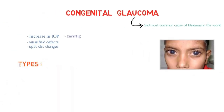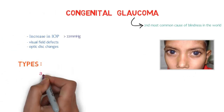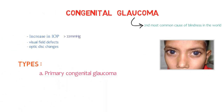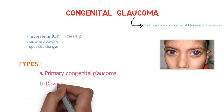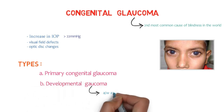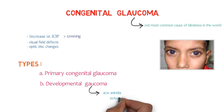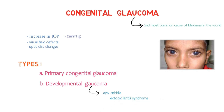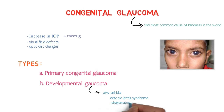There are two types of congenital glaucoma: primary congenital glaucoma and developmental glaucoma. Developmental glaucoma is associated with aniridia — a rare condition characterized by abnormal development of the iris — ectopic lentis syndrome, which is an inherited connective tissue disorder sharing features of Marfan syndrome particularly related to lens dislocation, phacomatosis, and some other disorders.